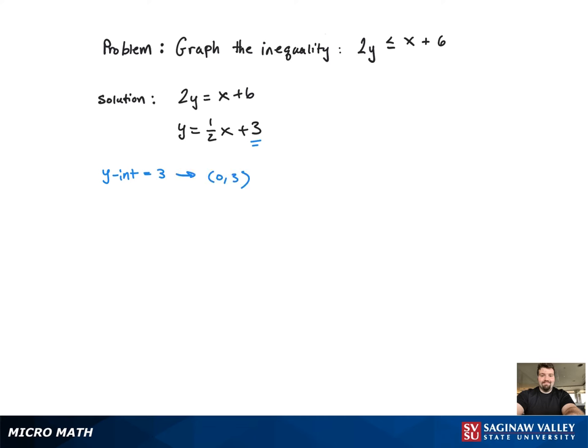So we're going to use the y-intercept 0, 3, then use the slope of 1 half to get to our next point of 2 comma 4. Now with the two points, we're good to graph the line, as you can see.